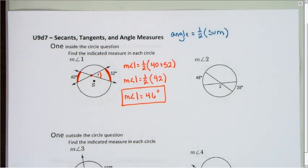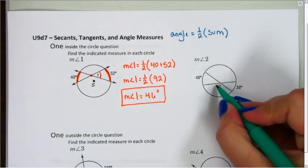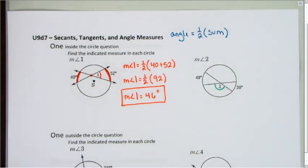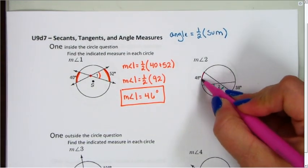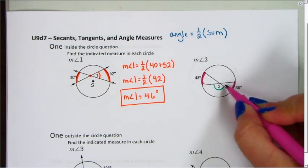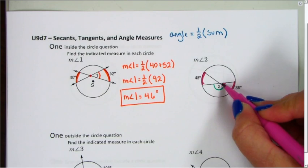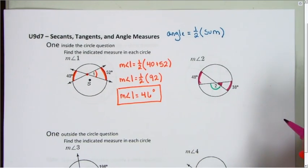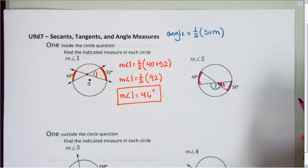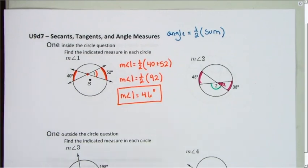For my second problem, when I look at this one, the angle they want me to find does not go with the intercepted arcs that I was given. The intercepted arc of 48 and the intercepted arc of 38 goes with this angle right here. So first, I'm going to find this angle here. I'm going to call it x, and then once I know what that is, then I can use that to help me find the measure of angle 2.